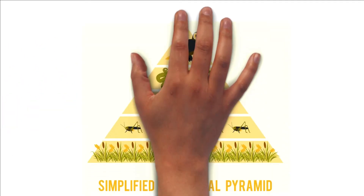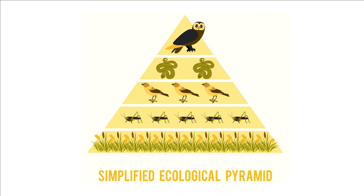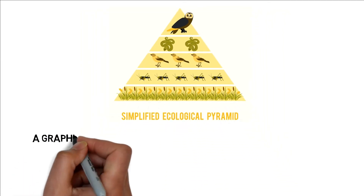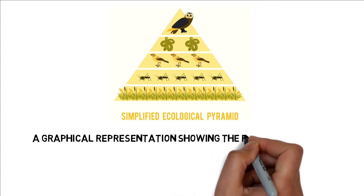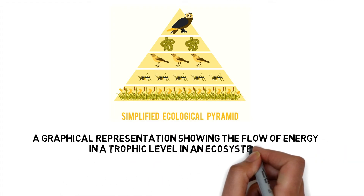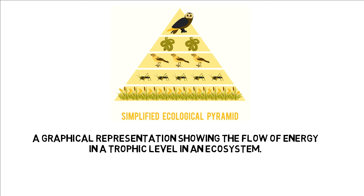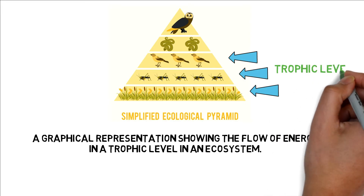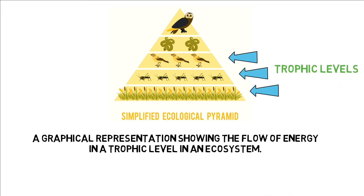On the other hand, we also have what we call an ecological pyramid or an energy pyramid. An energy pyramid is a graphical representation showing the flow of energy in a trophic level in an ecosystem. Ang bawat level na makikita ninyo sa inyong screen ay tinatawag natin na trophic level. A trophic level is the group of organisms within an ecosystem which occupy the same level in a food chain or an energy pyramid.